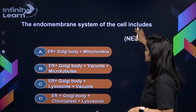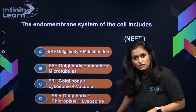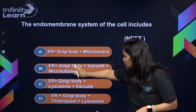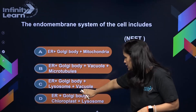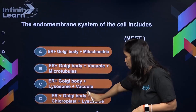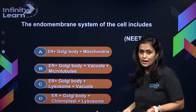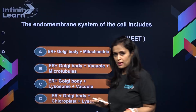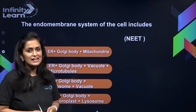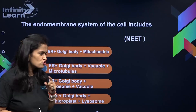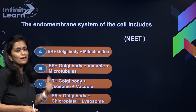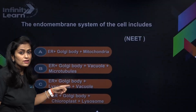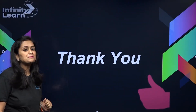The endomembrane system of the cell consists of which of the following? Option A: Endoplasmic reticulum, Golgi bodies, and mitochondria. Option B: ER, Golgi body, vacuoles, microtubules. Option C: ER, Golgi body, lysosome, vacuoles. Option D: ER, Golgi bodies, chloroplasts, and lysosomes. What do you think? Hint: chloroplast is also a type of plastid. The answer will be given in the Telegram link. Thank you for watching — try and answer this, let's see if my rockstars can get it. See you, take care, bye-bye!